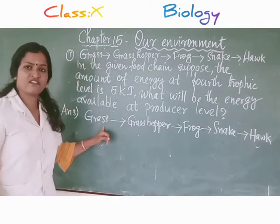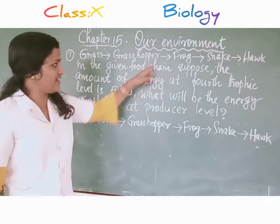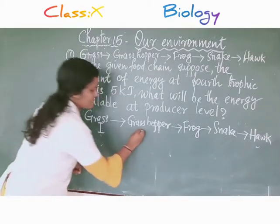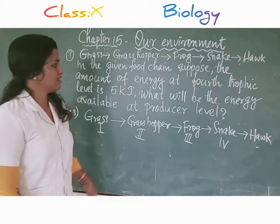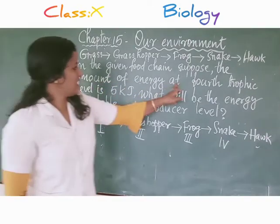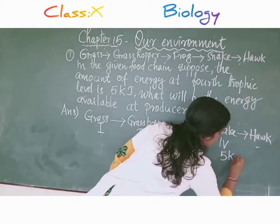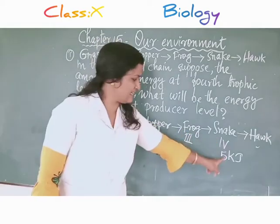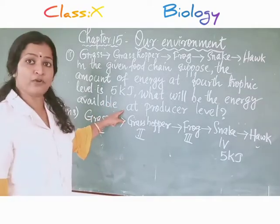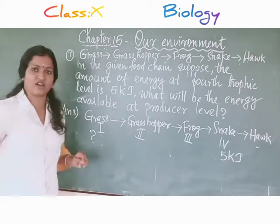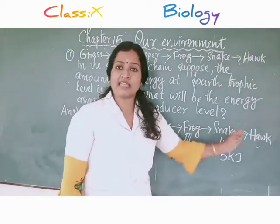First, we have to write this food chain: grass, grasshopper, frog, snake, hawk. Then mark all the trophic levels. The first trophic level is grass, second is grasshopper, third is frog, and the fourth is snake. So in the question, it is given that the amount of energy at the 4th trophic level is 5 kilojoules. We have to find out the energy available at the producer level. Producer is grass, the first trophic level. We know that only 10% of the energy of the previous trophic level will be transferred to the next trophic level.